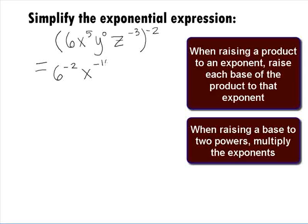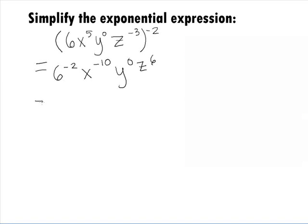Multiplying the negative 2 to each of our exponents, we get 6 to the negative 2 power times x to the negative 10 power times y to the 0 power times z to the 6 power.